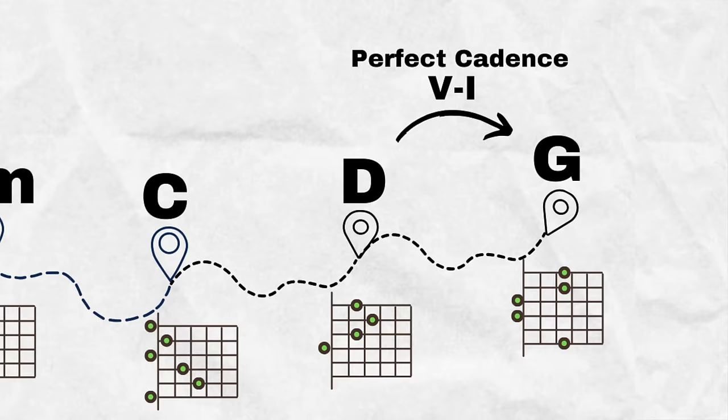One of the strongest, most important moments in this journey is the V-I, which occurs when chord V, D, leads back to chord I, G major — also known as a perfect cadence.